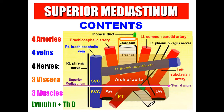Summary of superior mediastinum contents: four arteries — aortic arch, brachiocephalic artery, left common carotid artery, left subclavian artery. Four veins — left brachiocephalic vein, right brachiocephalic vein, upper part of superior vena cava, left superior intercostal vein. Four nerves — phrenic nerves, vagus nerves, left recurrent laryngeal nerve, cardiac branches to the cardiac plexus. Three viscera — trachea, esophagus, upper part of thymus gland. Three muscles — sternohyoid, sternothyroid, longus colli. Plus lymph nodes and thoracic duct.